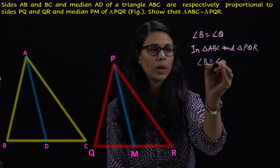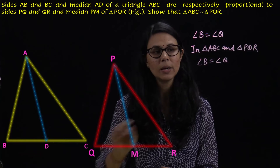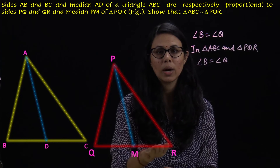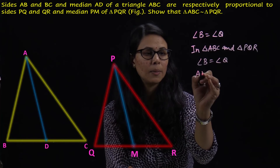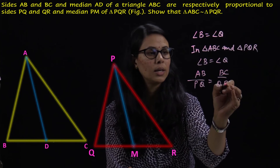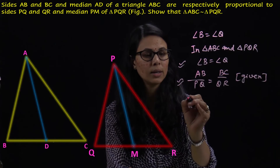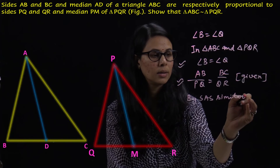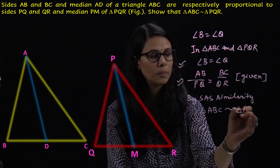The first thing is angle B is equal to angle Q. And AB upon PQ is equal to BC upon QR, which is the given condition. It means two triangles are similar by SAS similarity. So we can say triangle ABC is similar to triangle PQR, and here we have our answer proved.